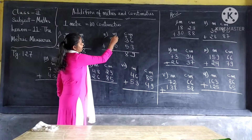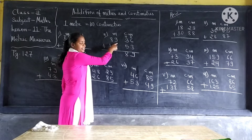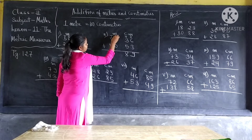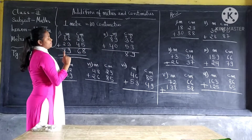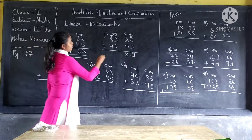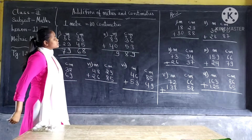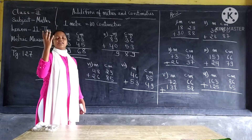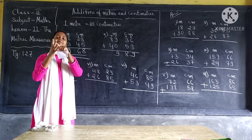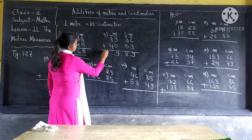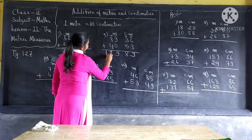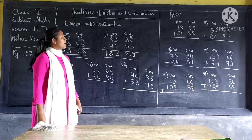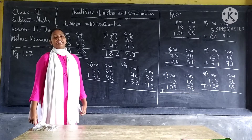Now, under the meter, we have eighty-nine plus forty. In your mind, just think of tens and ones. Under ones, we have nine plus zero. So nine will come here. Under tens, we have eight tens and four tens. Eight plus four equal to twelve. So we can say the answer is one hundred twenty-nine meters and eighty-nine centimeters.